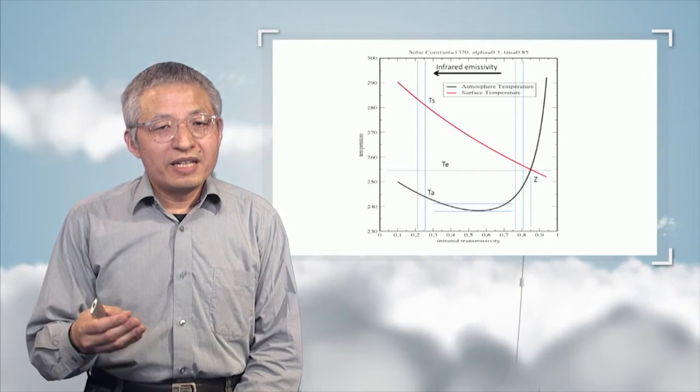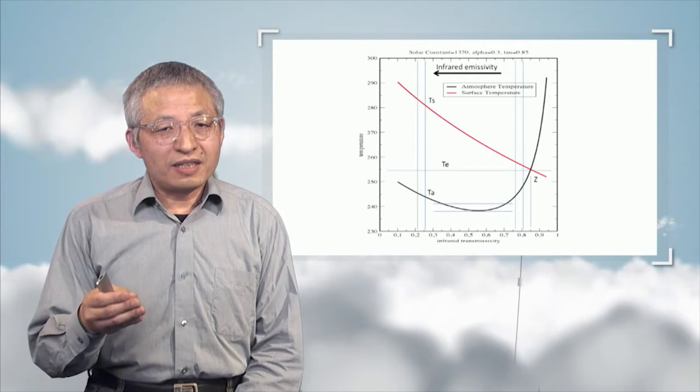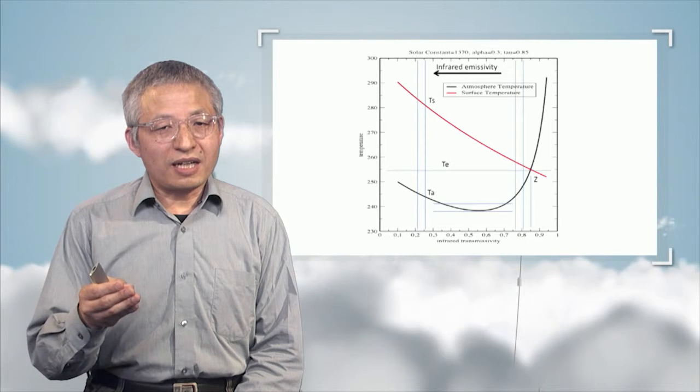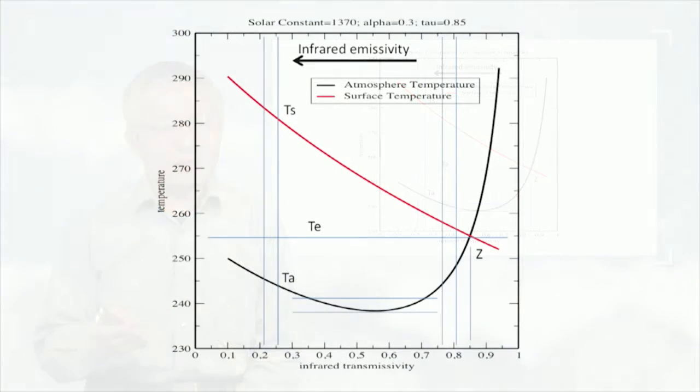I suggest now we have a look at this graph, which traces two different temperatures. The black curve is the atmosphere temperature, whereas the red curve is the surface temperature. We see that the two curves of temperature will vary depending on the X axis, the infrared transmissivity, i.e. the atmosphere's opacity to infrared rays.